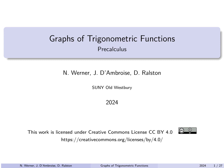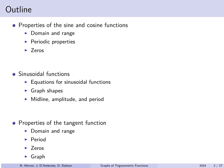Hello. In this lecture, we'll look at graphs of trigonometric functions. For the sine and cosine function, we'll investigate domain, range, periodic properties, and where their roots are. For sinusoidal functions in general, we'll look at their equations, what the graphs look like, including terminology such as midline, amplitude, and period. Then we'll introduce graphing the tangent function, looking at its domain and range, its period, its roots, and how to visualize its picture.